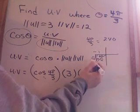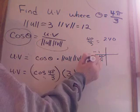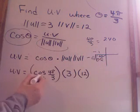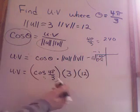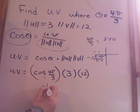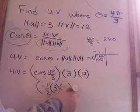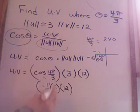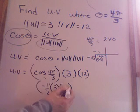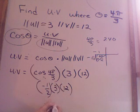What about the 1? Positive or negative? Negative. What about the root 3? Positive or negative? Negative. I want the cosine of that angle. What's the cosine of that angle? Negative 1/2 times 3 times 12. Well, that's easy. 2 into 12 is 6. 3 times 6 is 18. Negative 18.